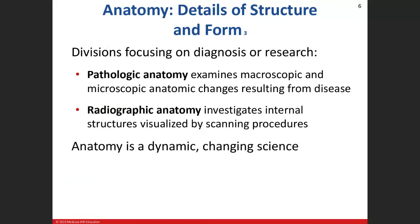The two other divisions of anatomy are pathologic — that is the study of disease, when normal anatomy goes abnormal — and radiographic anatomy, when we use visual imaging like MRIs, CT scans, and x-rays to actually look at structures. That's a huge concept.